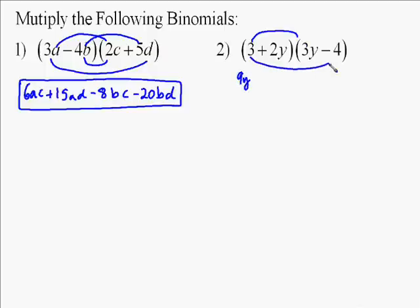Over here on this problem, again, we go through and multiply the first times the first, so that's 9y. Then the second times the second, which is 3 times negative 4, which is negative 12.